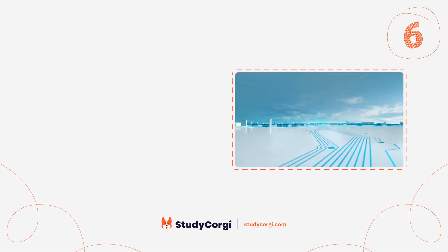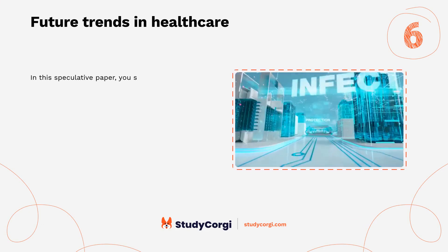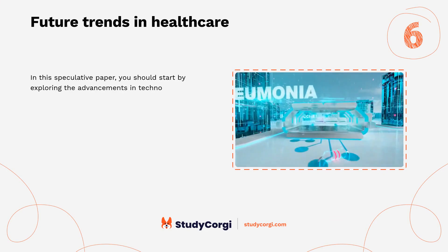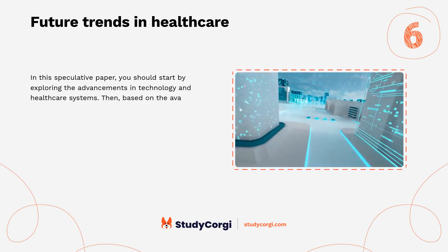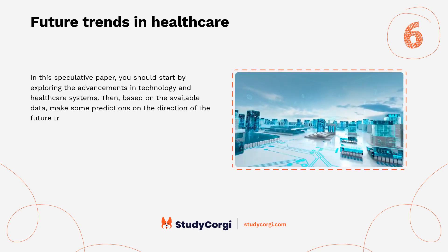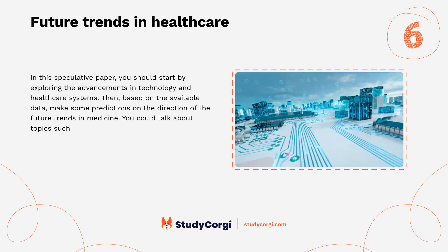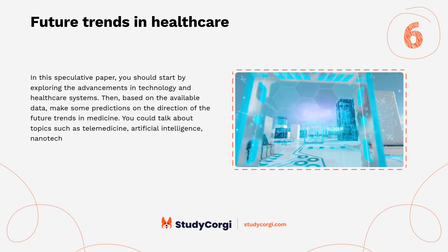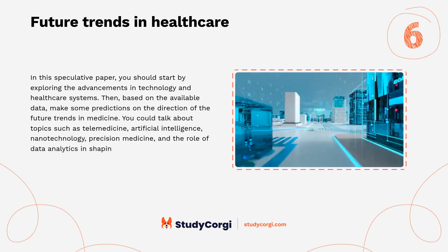Future trends in health care: in this speculative paper, you should start by exploring the advancements in technology and health care systems. Then, based on the available data, make some predictions on the direction of future trends in medicine. You could talk about topics such as telemedicine, artificial intelligence, nanotechnology, precision medicine, and the role of data analytics in shaping health care.